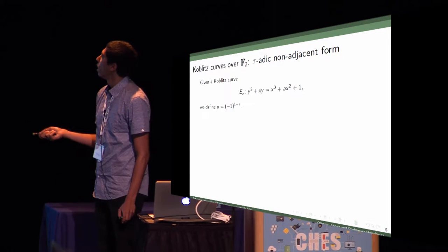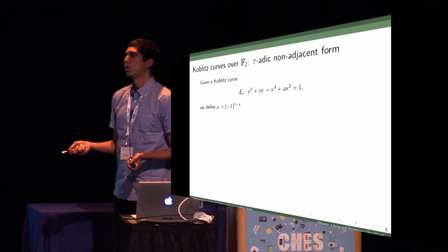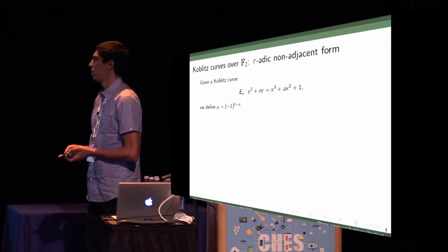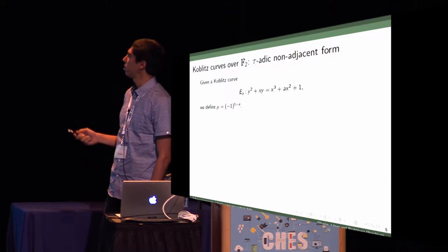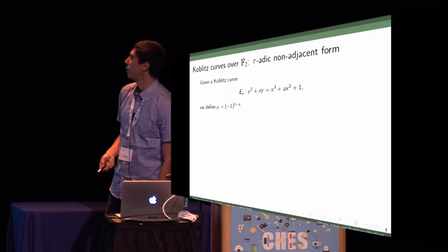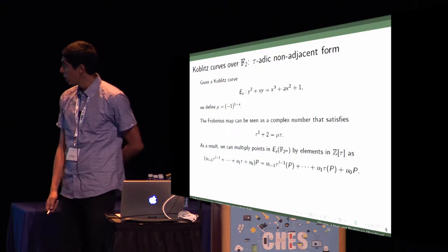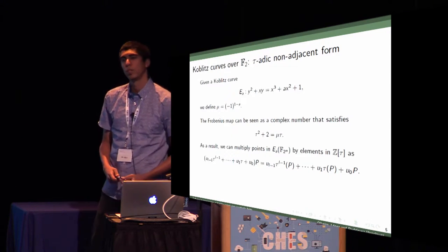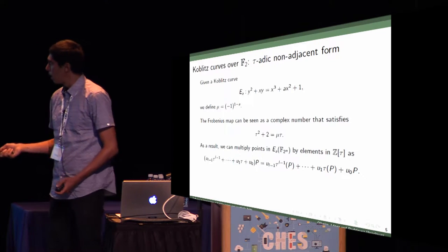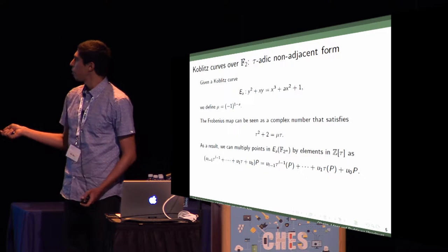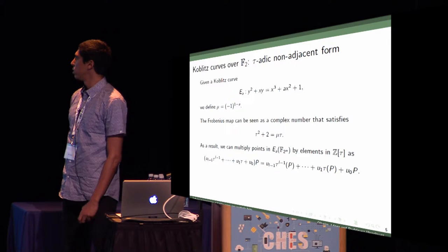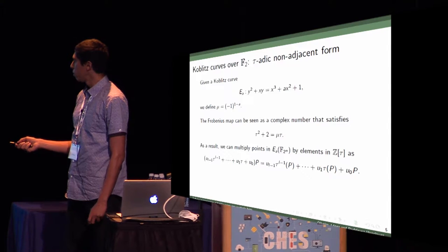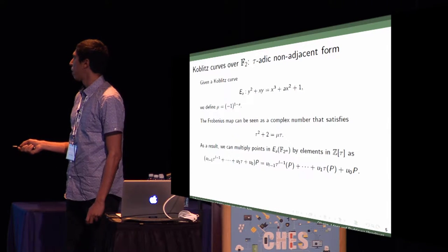Why can we substitute the point doublings by applications of the Frobenius map? We have the curve. Let's define mu equals minus 1 to the power of 1 minus A. The Frobenius map can be seen as a complex number which satisfies tau squared plus 2 equals mu tau. As a result, we can multiply points in this group by elements in this polynomial ring, like multiple powers of tau.